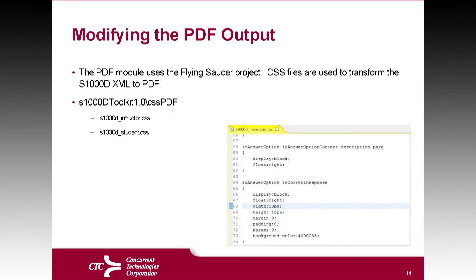The PDF output uses the Flying Saucer open source project, which applies CSS stylesheets to the XML to produce the PDFs — it's very slick and made the process straightforward. We created an instructor version with question answers and a student version without. This could be made more detailed to meet an organization's specific needs. That's everything for today — thank you very much. Any questions?